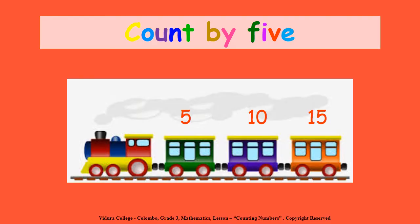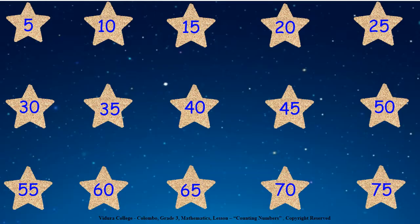Now, children, we are going to learn how to count by 5. When we are counting by 5, we read numbers 5 by 5. Now, we are going to read numbers 5 by 5. Start with me: 5, 10, 15, 20, 25, 30, 35, 40, 45, 50, 55, 60, 65, 70, 75.